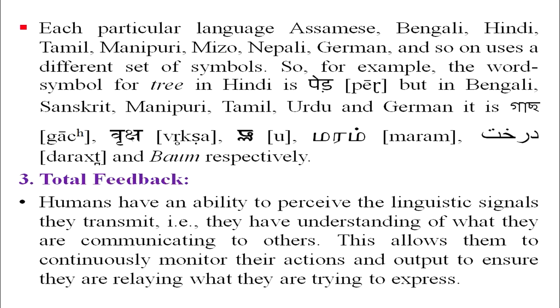There is nothing in the sequence of sounds T-R-E-E that indicates the shape of the object it denotes. Each language — Assamese, Bengali, Hindi, Tamil, Manipuri, Mizo, Nepali, German — has different symbols for the same concept. For example, 'tree' in Hindi is 'ped,' in Bengali 'gaach,' in Sanskrit 'vriksh,' in Manipuri 'oo,' in Tamil 'maram,' in Urdu 'darakh,' and in German 'Baum.'